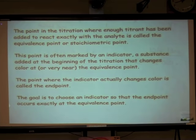And the goal in a titration is to choose an indicator so that the end point, that is where the indicator changes color, occurs exactly at the equivalence point between the two reactants.